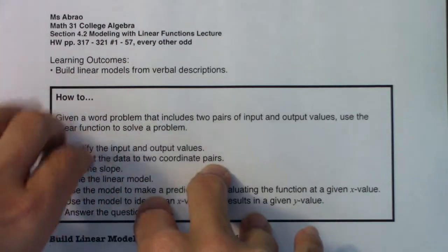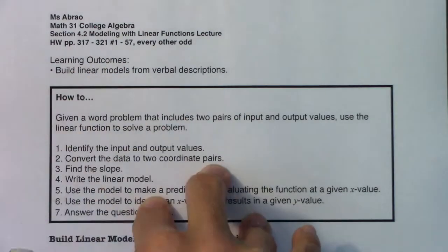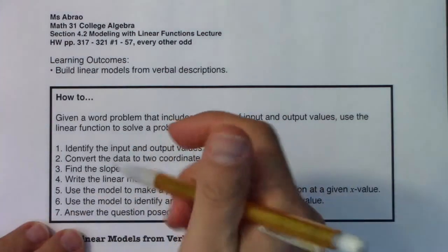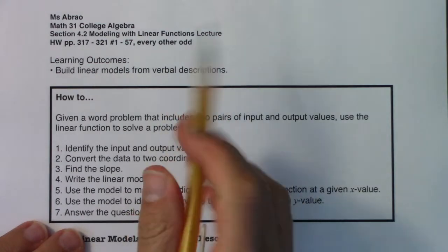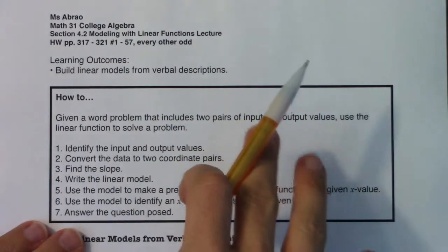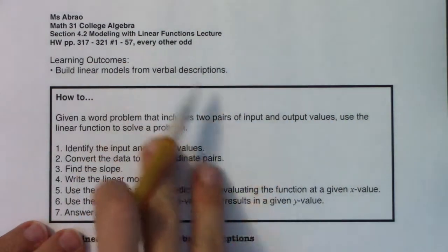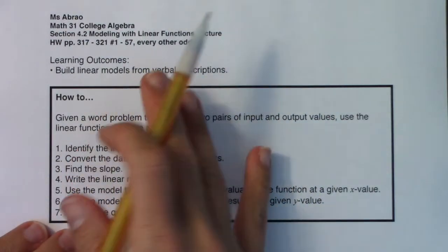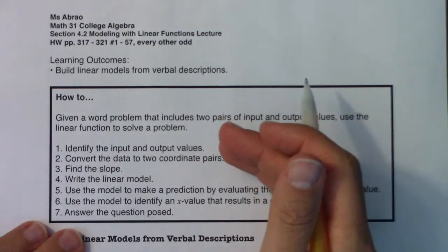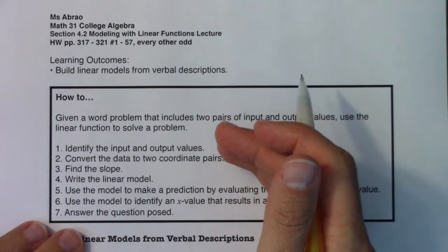And today, we won't be predicting as much into the future as we will in section 4.3. When we get to the next section, we're still going to continue to build linear models from word problems, from verbal descriptions, but we're really going to use statistics in the next section. So this is the more math side of building linear models, and in section 4.3, we're going to introduce statistics to build linear models.